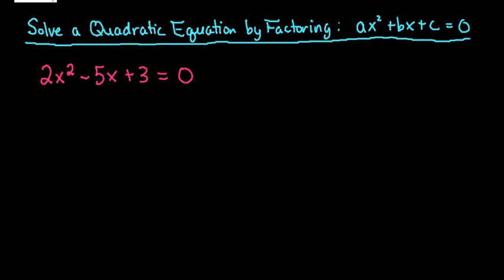For this video, we're going to solve a quadratic equation by factoring. For this one, we have a leading coefficient that is not 1. That's what ax² + bx + c = 0 means - we have a leading coefficient other than 1 in the front.